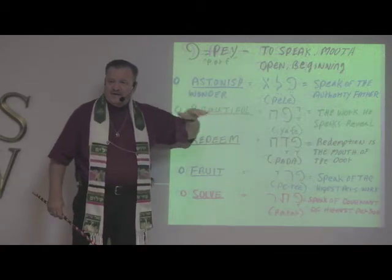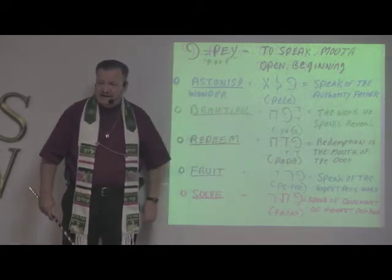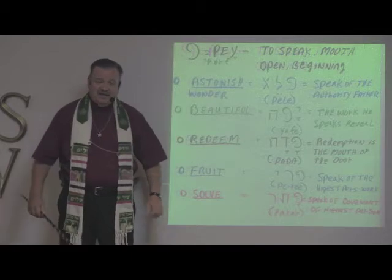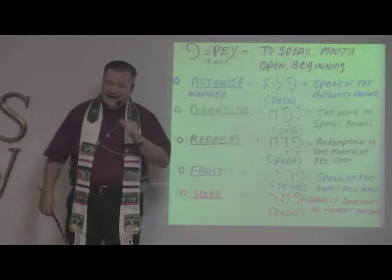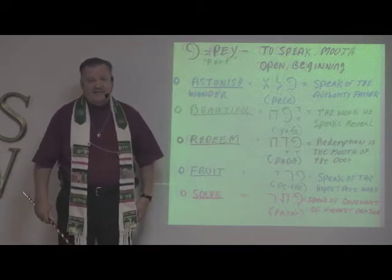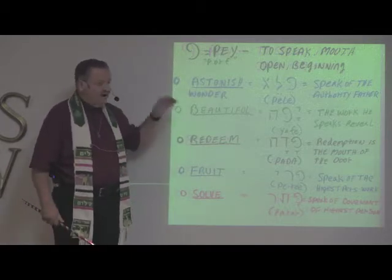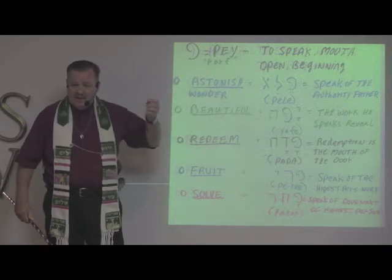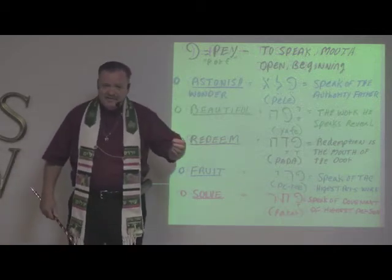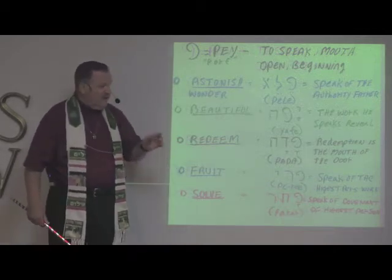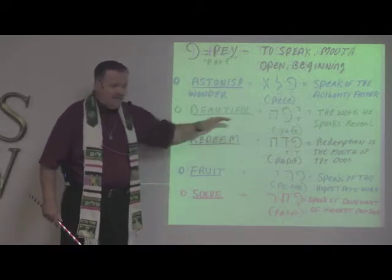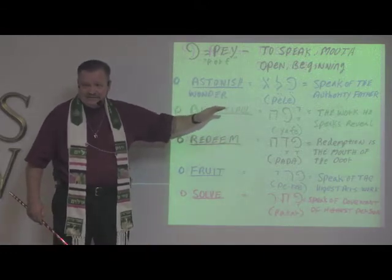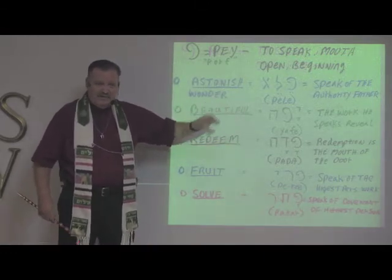When Christ was speaking and said 'I'm the way, the truth, and the life,' he wasn't speaking that in Greek — he was speaking that in Hebrew. If you want to know what he means by the way, the truth, the life, you need to go back into the Hebrew, because that's what he was speaking — Hebrew or Aramaic.